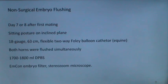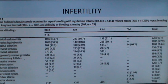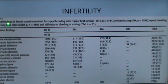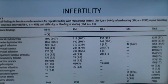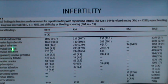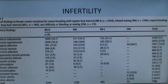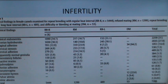Infertility in camels is less prevalent. Clinical findings show that clinical endometritis is the most prevalent problem, followed by ovarian hydrosalpinx, vaginal adhesions, cervical stenosis, cervical adhesions, anovulatory follicles, inactive ovaries, hydrosalpinx, uterine adhesions, persistent hymen, vulvar atresia, and pelvic abscess.